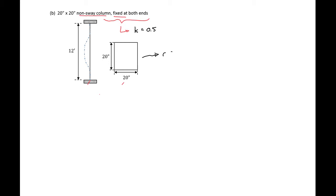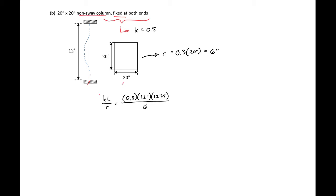Our r for a rectangular section is 0.3 times h, which again equals 6 inches. We can find our kL/r to be 0.5 times 12 feet times 12 inches per foot divided by 6 inches, giving us a kL/r of 12.